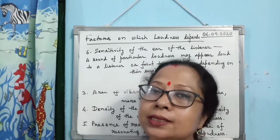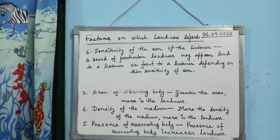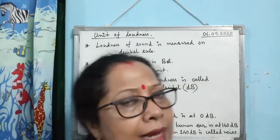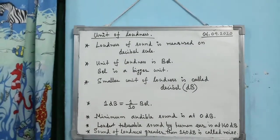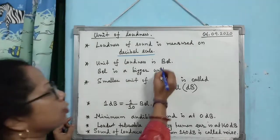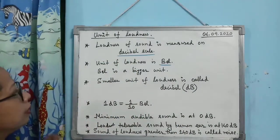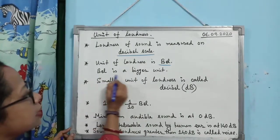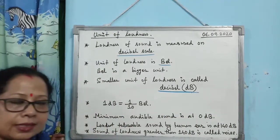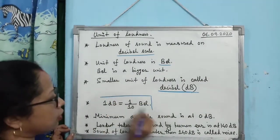Please learn the definition of loudness, the six factors on which it depends, and how loudness depends on each factor. The loudness of sound is measured on the decibel scale. The unit of loudness is the bel, named after scientist Alexander Graham Bell. Since the bel is a larger unit, we commonly use the smaller unit — decibel. One decibel equals one-tenth of a bel.